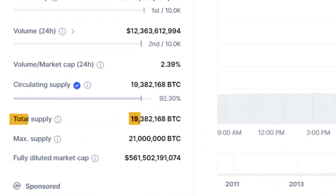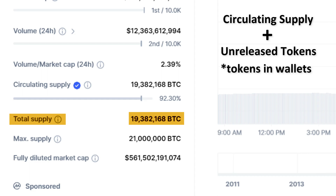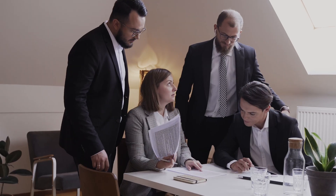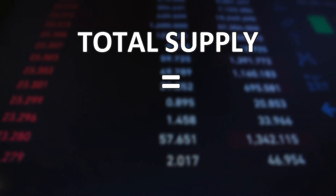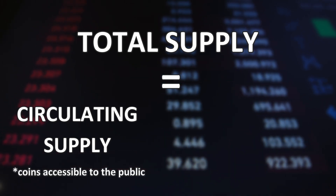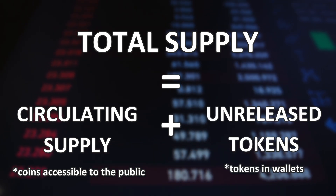Total supply is basically the circulating supply plus those tokens that are hidden — tokens that were created and mined but weren't released to the public. Maybe there's a coin where some investors or founders first got into it and were given coins before anyone else. So total supply equals the circulating supply plus those hidden tokens that were created but are not currently available to us.